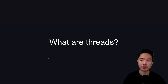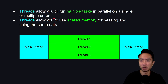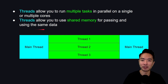So what are threads? Threads allow you to run multiple tasks in parallel on a single or multiple cores. Threads also allow you to use shared memory for passing and using the same data between threads. Here's a visual of a main thread and a few threads running in parallel.